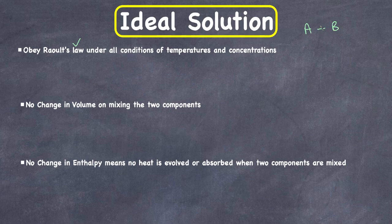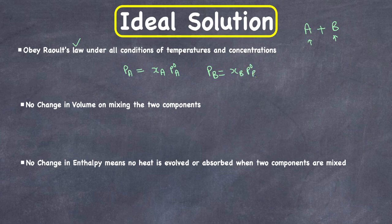When we mix them, we get an ideal solution. We can change the concentration of A or B with all possibilities and they will obey Raoult's law. As per Raoult's law, the partial vapor pressure of component A when we mix them equals the mole fraction of component A times P₀A, which is the vapor pressure of pure component A. Similarly, PB equals XB times P₀B. Both components obey Raoult's law.